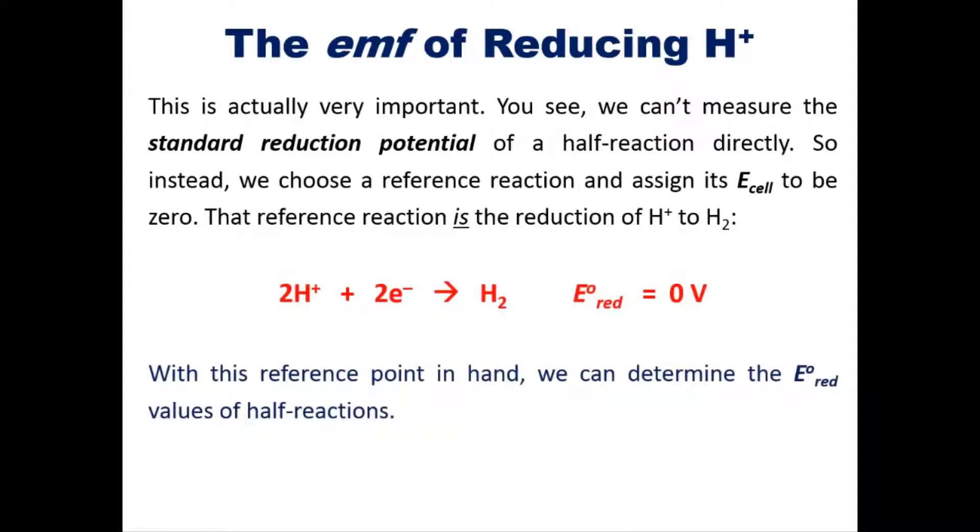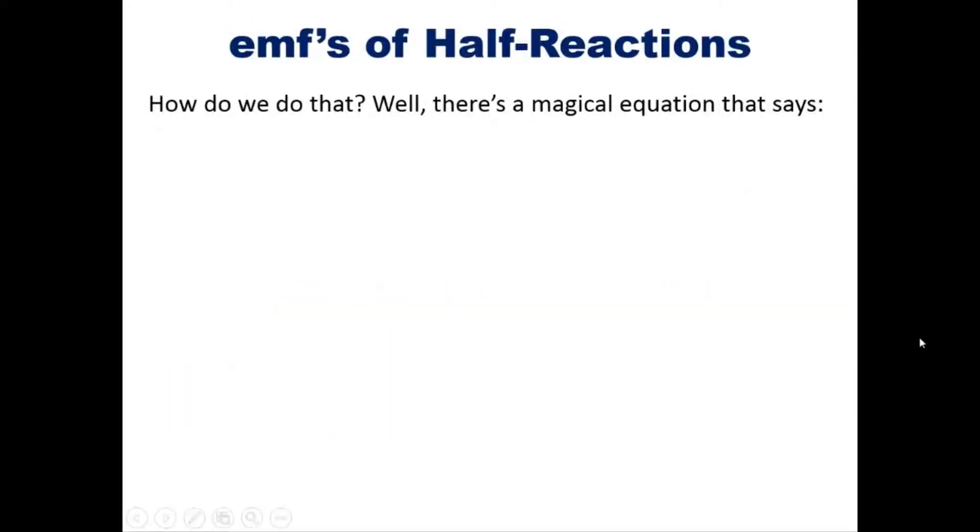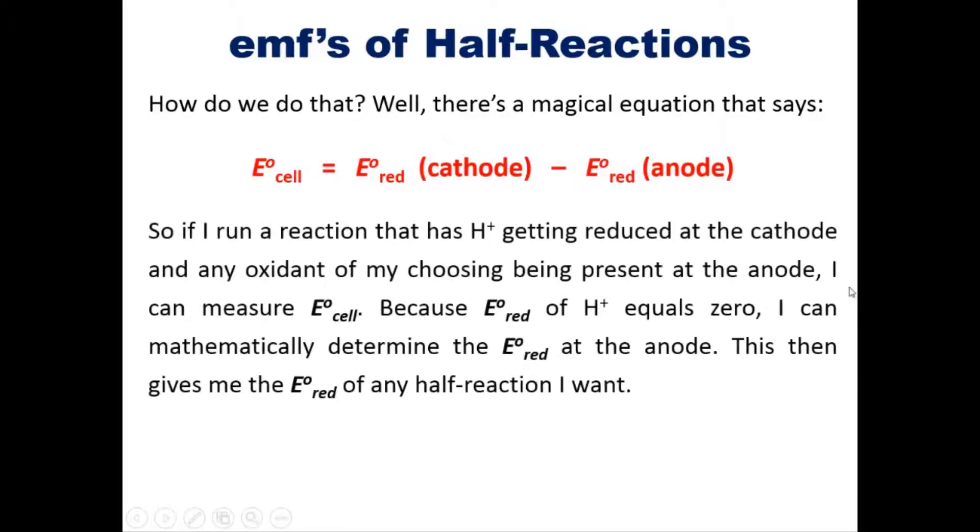With this reference point in hand, we can now determine the reduction potential values of half reactions. How do we do that? Well, there's a magical equation that says that the reduction potential of a cell is equal to the reduction potential of the cathode minus the reduction potential of the anode. So if I run a reaction that has H+ getting reduced at the cathode and any oxidant of my choosing being present at the anode, I can measure E°_cell. Because the reduction of H+ equals zero, I can mathematically determine the reduction potential at the anode. This then gives me the reduction potential overall of any half reaction I want. Make sense? I hope so.